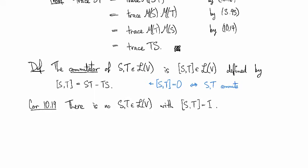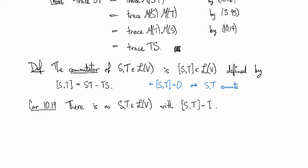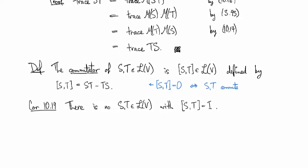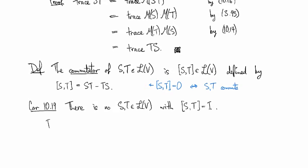It remains true in infinite dimensions as long as you are very careful. But you need to be careful. So there is no S and T that has commutator equal to the identity. Let's go ahead and prove that.